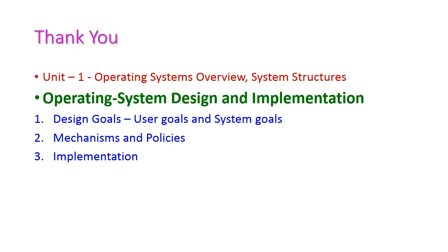To summarize, we have seen operating system design and implementation. Under this topic we first saw design goals: user goals and system goals. After that we saw mechanisms and policies, where we must separate mechanism and policy while designing the OS. After designing, we need to implement the operating system using either assembly language or high-level language. We also saw the advantages and disadvantages of using high-level languages. In the next class we will see another important topic from the first unit. Thank you.